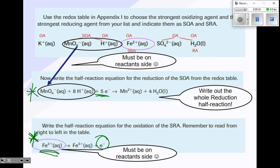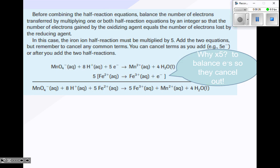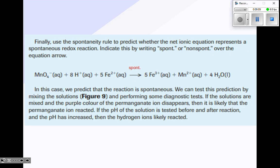I write out the strongest oxidizing agent's reduction half-reaction and the strongest reducing agent's oxidation half-reaction. There are five electrons in the reduction half-reaction and one in the oxidation half-reaction, so I multiply the oxidation half-reaction by five to balance the electrons. Then I cancel the electrons and add the two half-reactions to get my net ionic equation. It's spontaneous because the strongest oxidizing agent is above the strongest reducing agent on the table, meaning the reaction will happen.